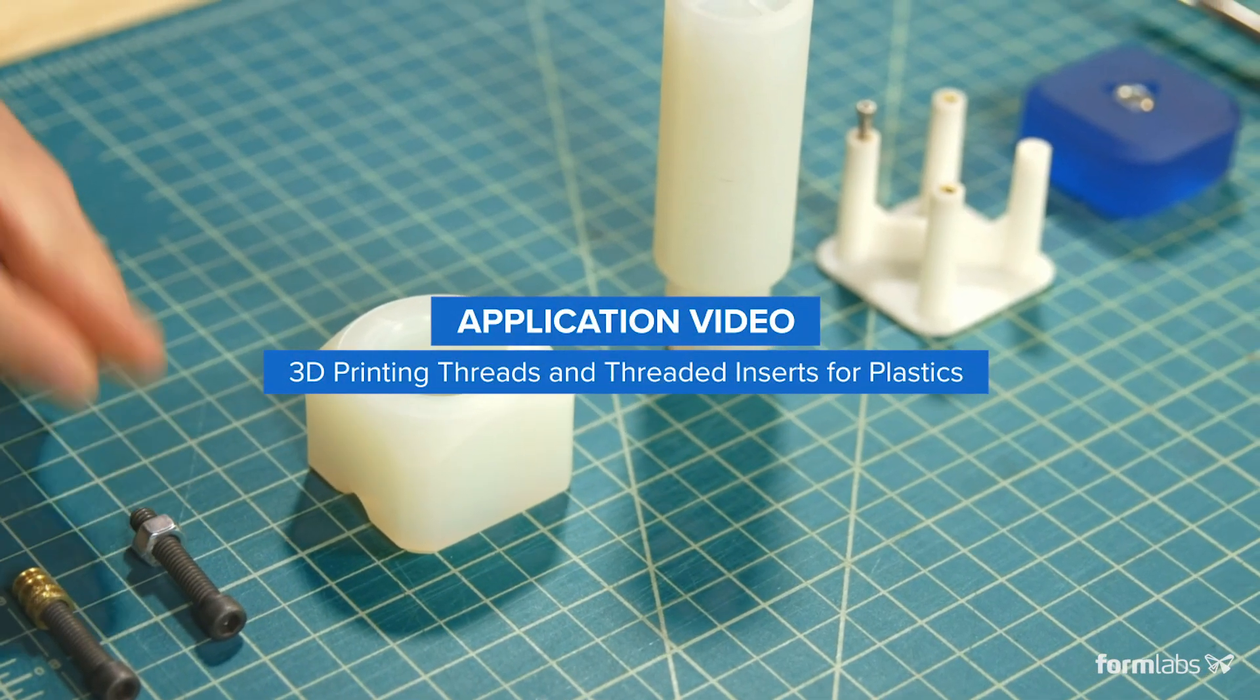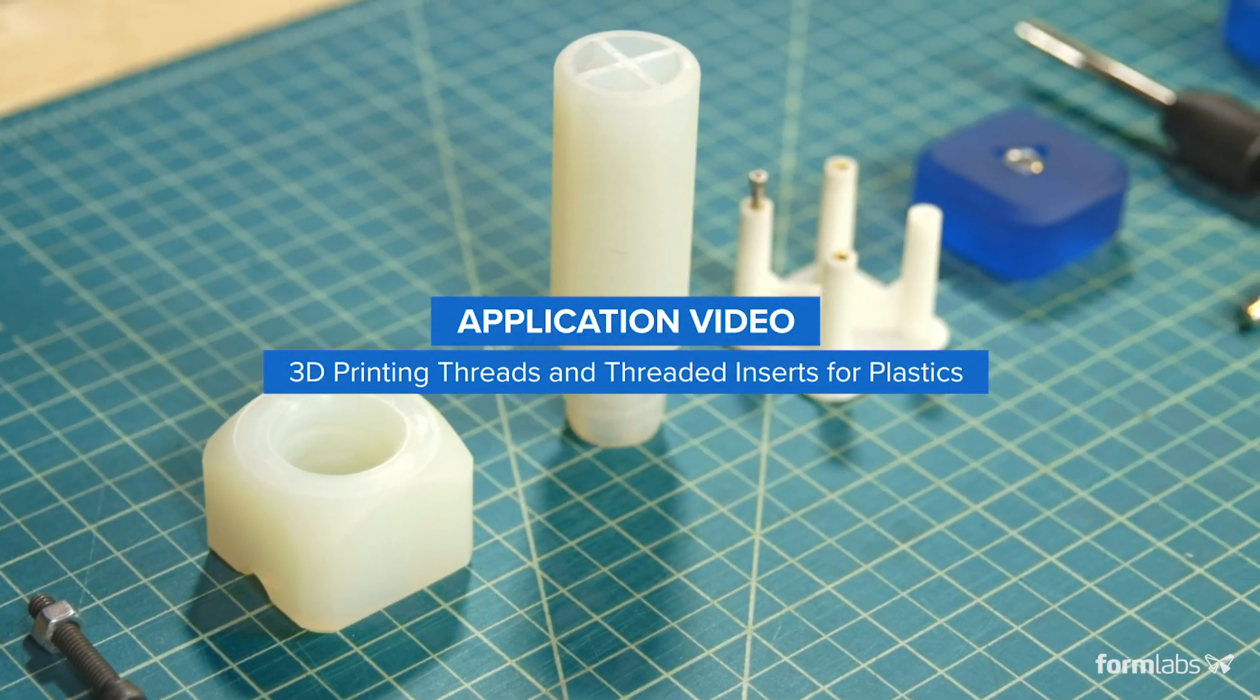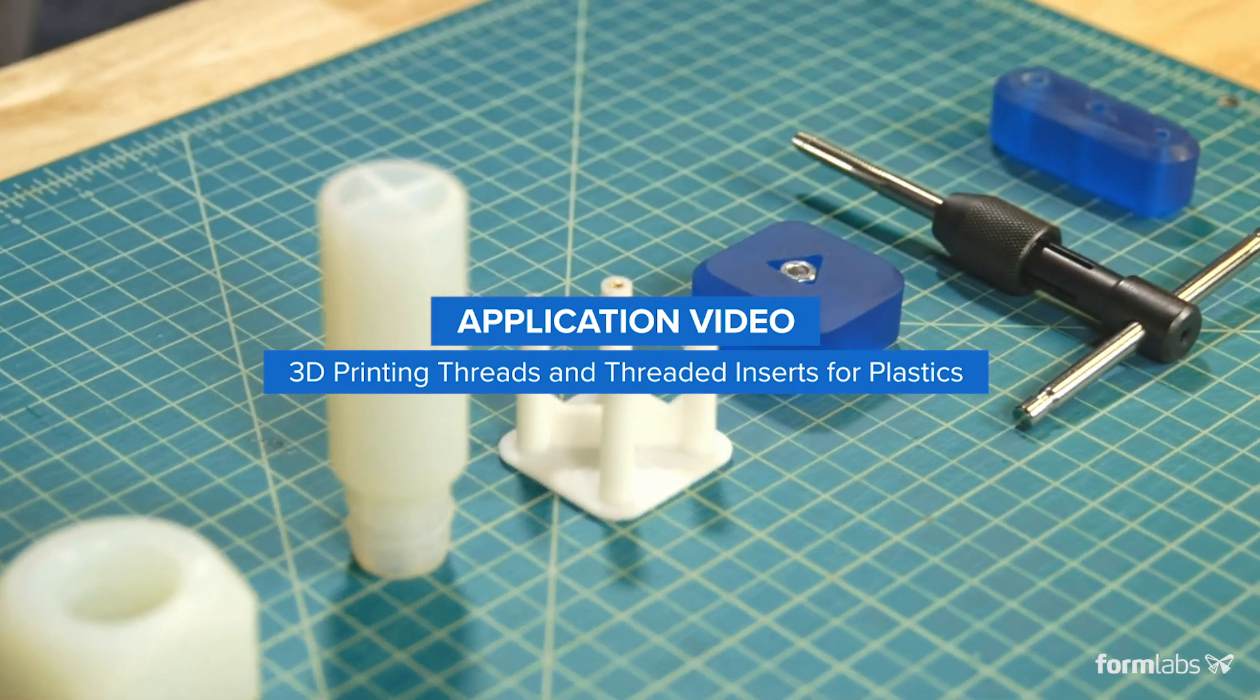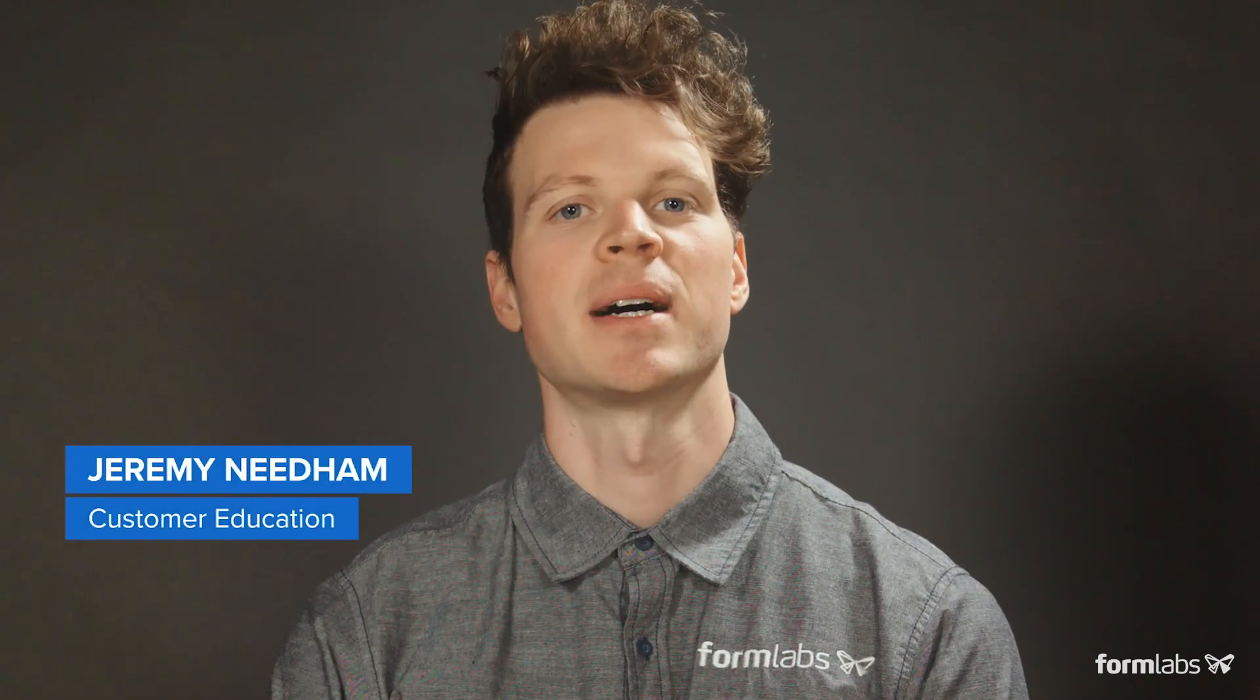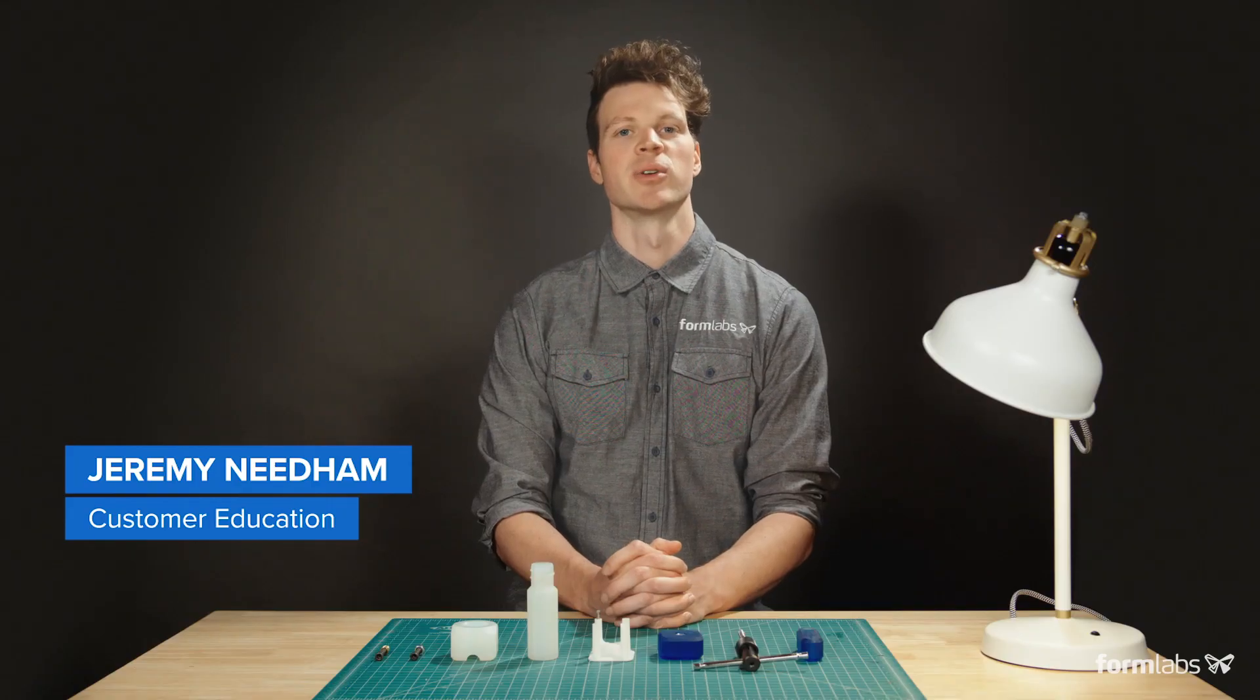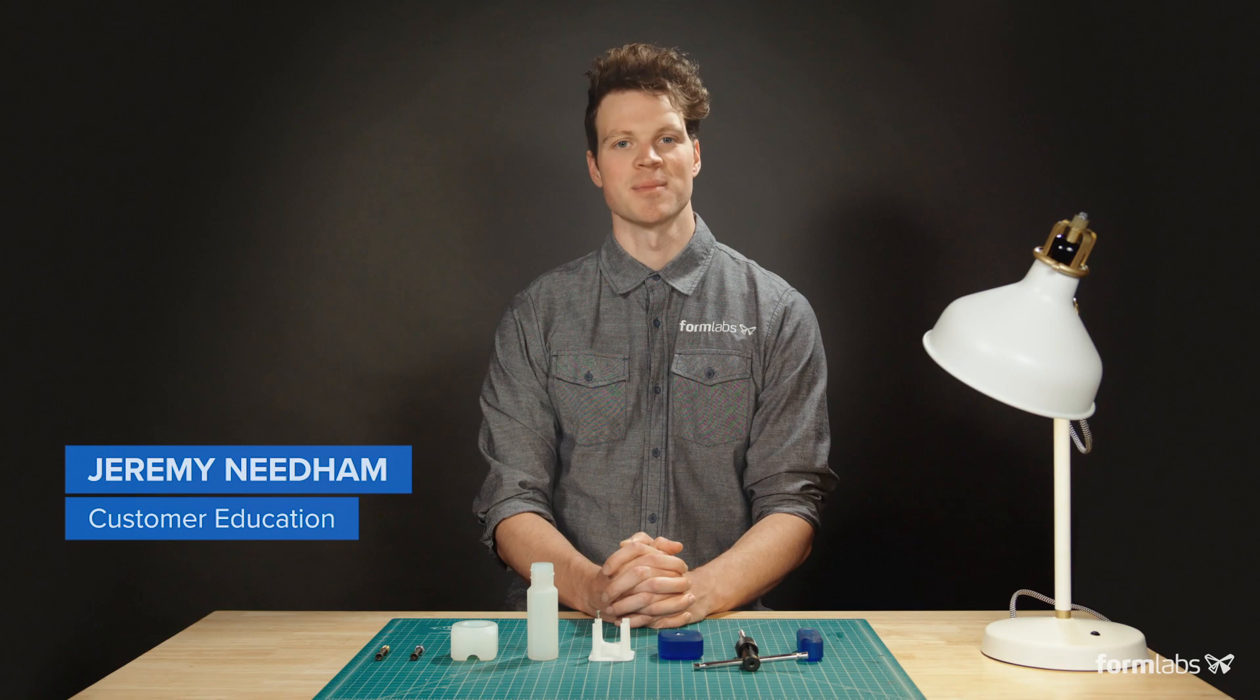Screws, bolts and threaded features are common methods for assembling and aligning mechanical components or transmitting motion. Today we'll look at how to combine standard hardware with 3D printed parts as well as guidelines for including threaded features in printed parts themselves.